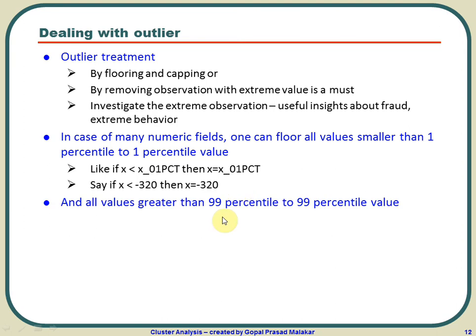Similarly, you can cap anything greater than the 99th percentile to the 99th percentile value. For example, if the 99th percentile value of x is 940 and x is greater than 940, then set x equal to 940. So values like 945 or 1005 will all become 940. That's a quick way of doing it when you have many variables.